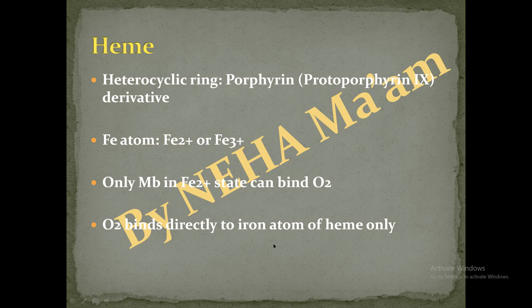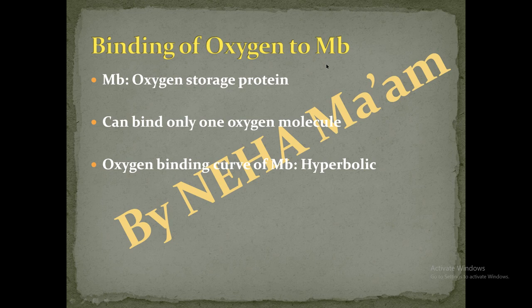Next is the binding of oxygen to myoglobin. Myoglobin is considered an oxygen storage protein — it stores oxygen. It can bind to only one oxygen molecule at a time. The oxygen binding curve of myoglobin is considered a rectangular hyperbola.